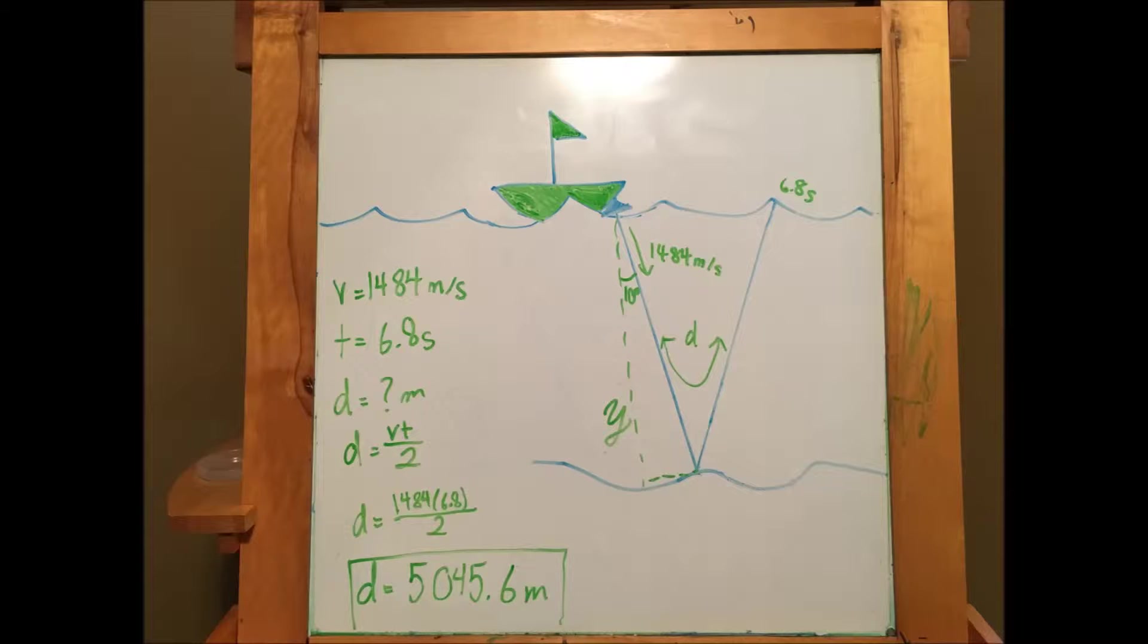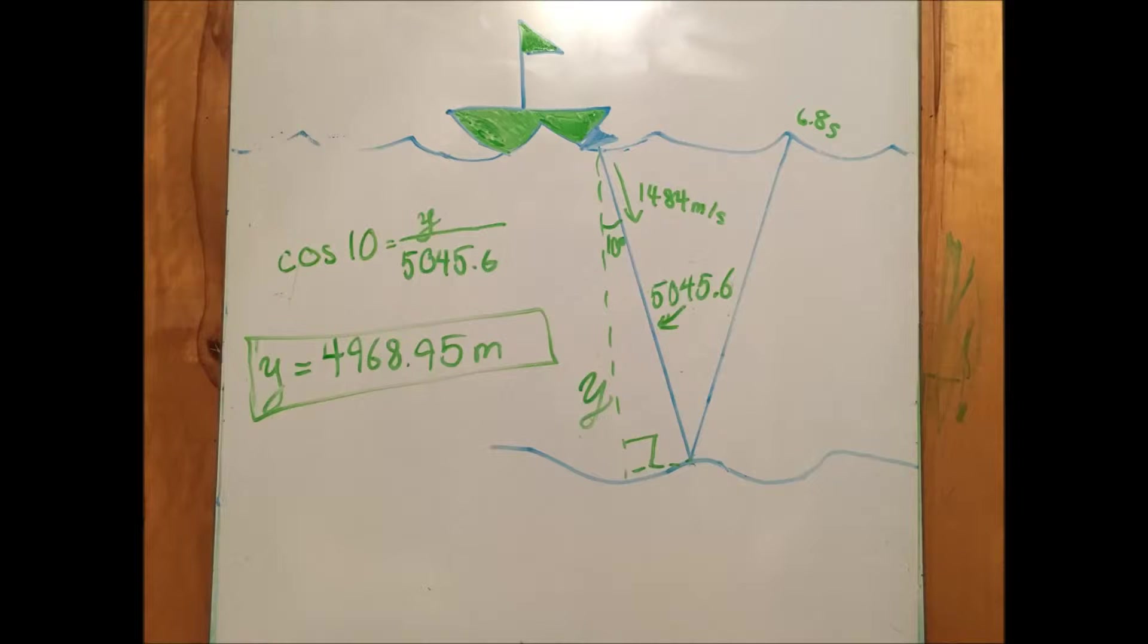For example, if you were looking to find the depth of the ocean by using the average velocity of sound in water and measuring the time it takes for a sound emitted at 10 degrees to rebound off of the seabed back to the surface, using the d equals vt over 2 equation is necessary. If d is solved for, basic properties of triangles and a cosine function can be used to triangulate the depth y of the seabed.